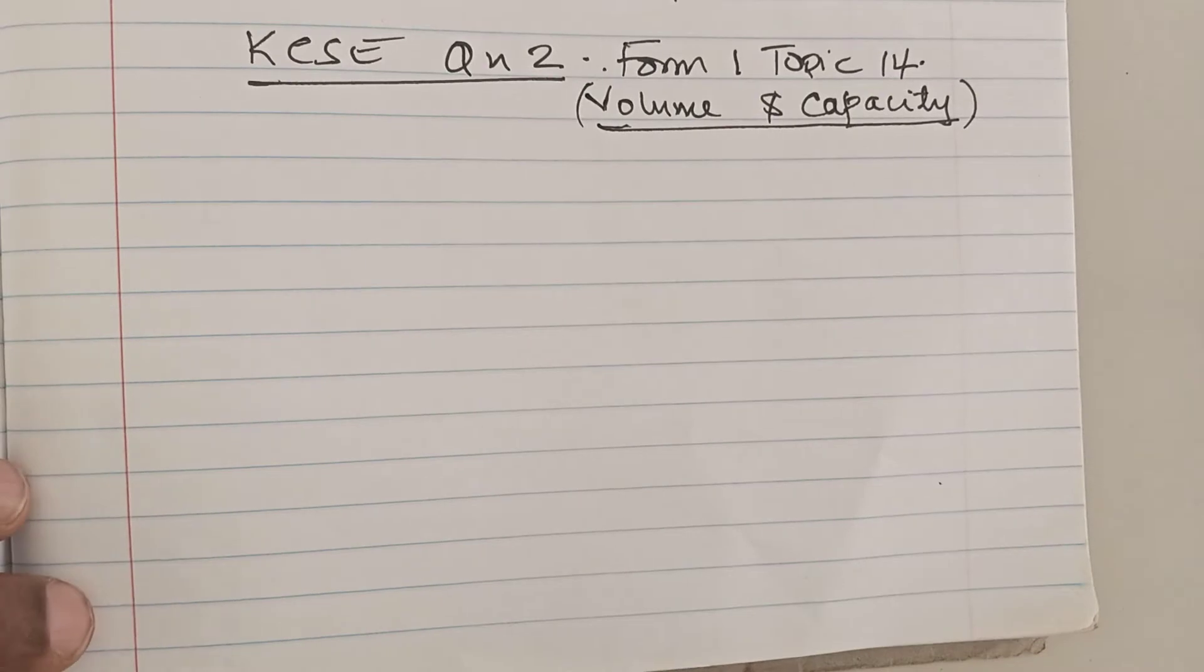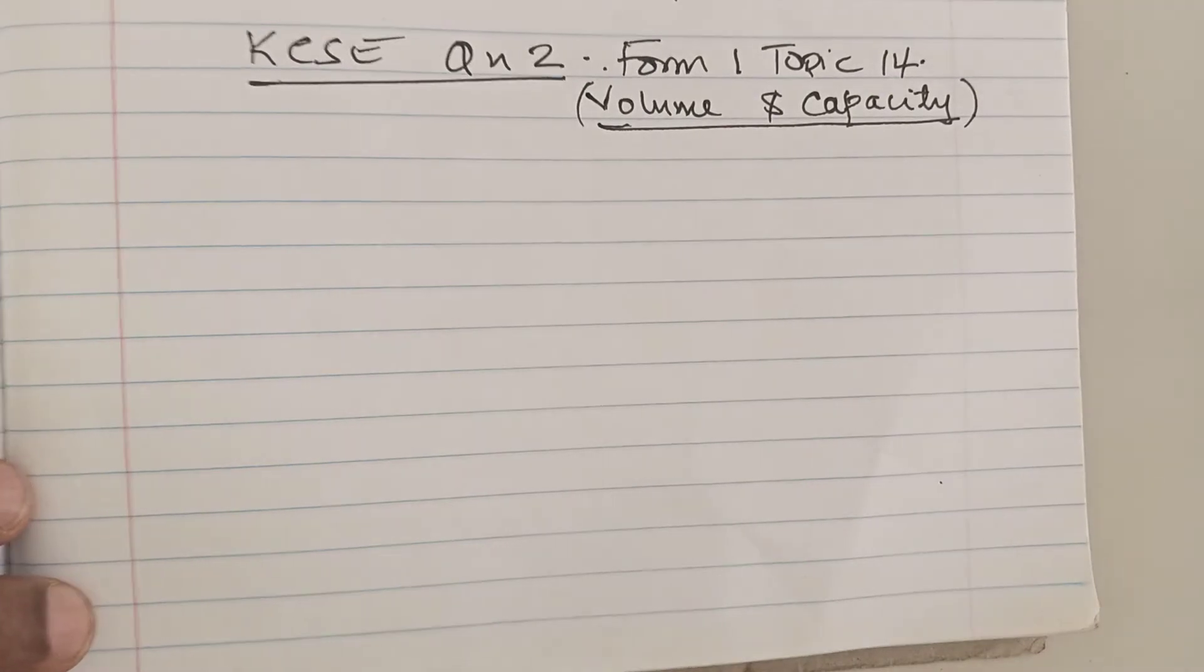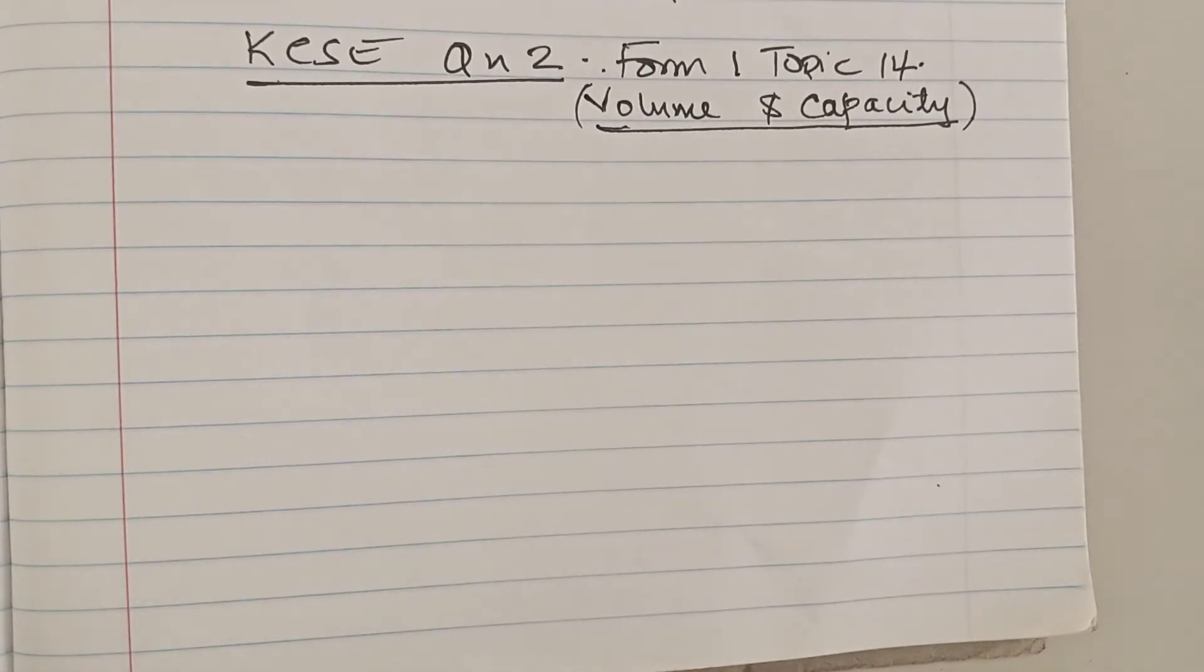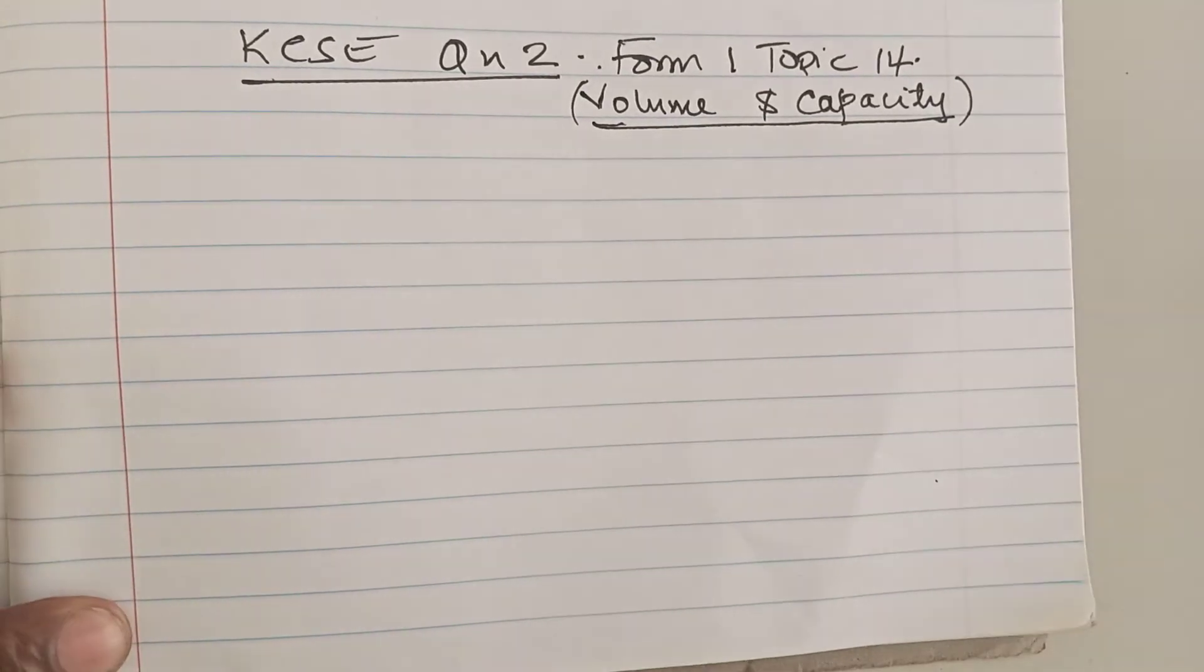The question says, a rectangular tank measures 2.6 meters by 4.8 meters at the base and has water to a height of 3.2 meters.